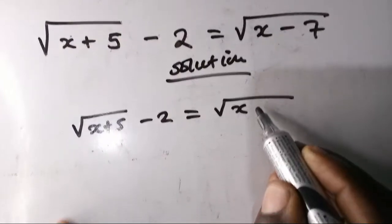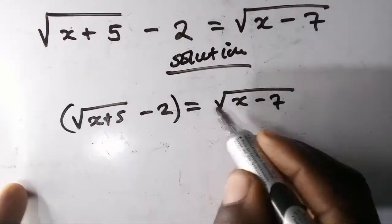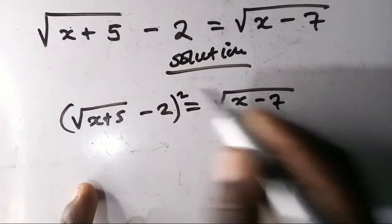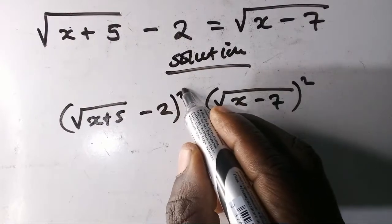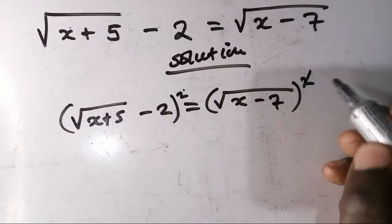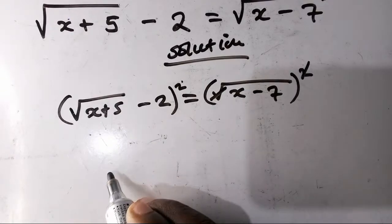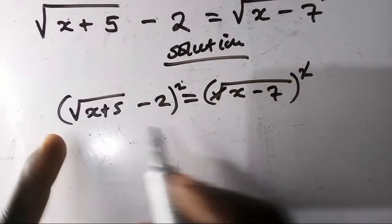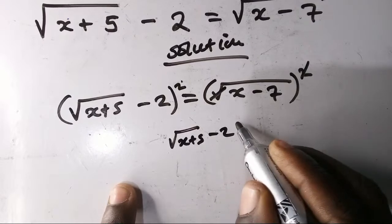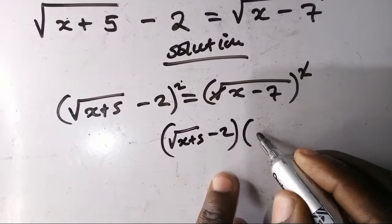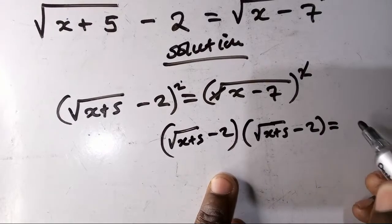If you reach here, you have to square both sides to remove the square roots. When we square both sides, this two and this square root will cancel. We're going to use the difference of two squares here. So we say: root x plus 5, then minus 2, in brackets.